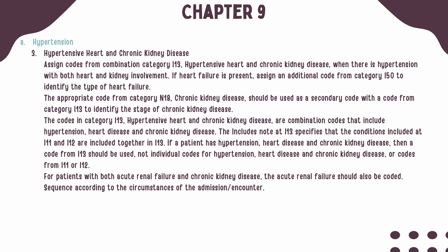When both hypertensive heart disease and chronic kidney disease are present, a minimum of three codes are assigned: first, a code from Category I-13, followed by the appropriate code from Category I-50 for the type of heart failure, then a code from Category N-18 to identify the stage of CKD. If renal failure is also present, an additional code from Category N-17 should be assigned. Remember, when both heart and kidney involvement are present, use the combination code I-13, not individual codes from I-11 and I-12.